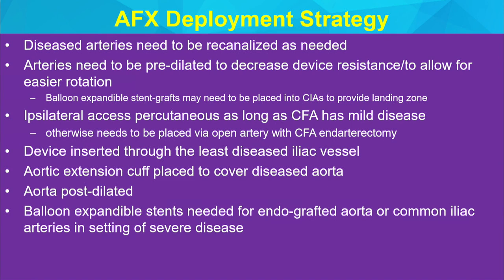The deployment strategy requires recanalizing diseased arteries and predilating them. The aorta must be big enough not only to place the device through but also to allow rotation, because sometimes a wire loop must be resolved by rotating the device. Ipsilateral access is typically done percutaneously using pre-close techniques. However, if the patient has moderate or severe common femoral disease, you must deliver the device through an open groin with femoral endarterectomy. You must insert through the least diseased iliac vessel and can place an aortic extension cuff to cover the diseased infrarenal aorta.